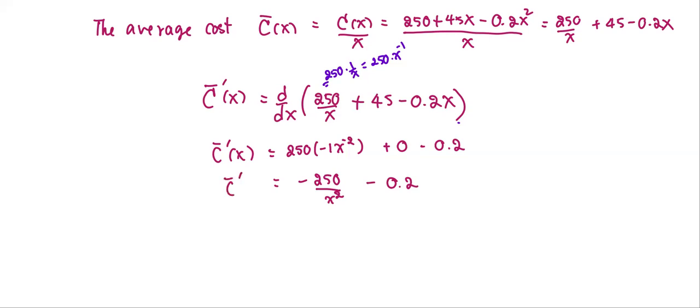As we see, both terms are negative, so since x is positive, therefore for any x ≥ 0, C̄'(x), which is the derivative of the average cost, is always less than 0. So we can say that the average cost is always decreasing.